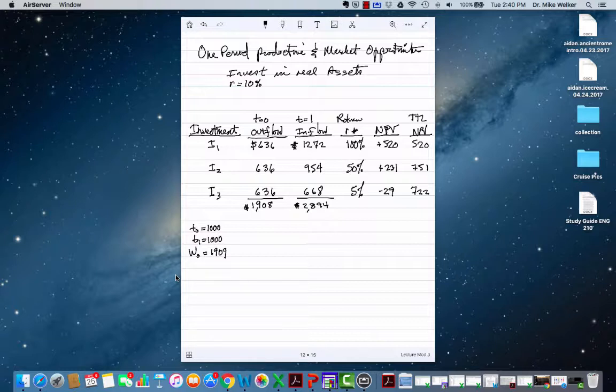I know i1 is desirable because the internal rate of return exceeds the market rate of return. i2, if we take that one on, our wealth is going to go up because the NPV is positive and again the IRR exceeds the market rate. With just the first two investments, my wealth would be $2,661. When I take on the third investment, my wealth will drop.